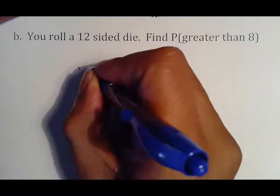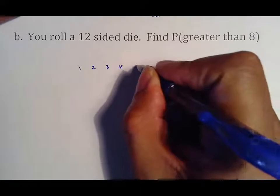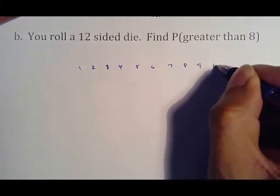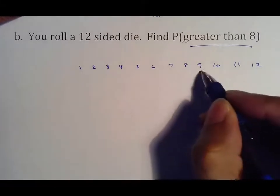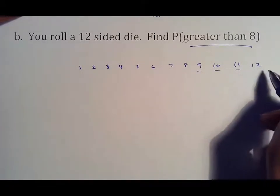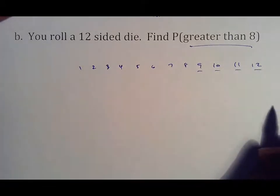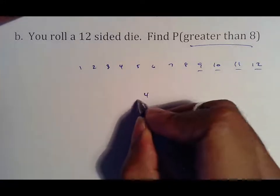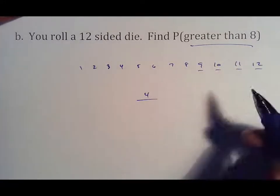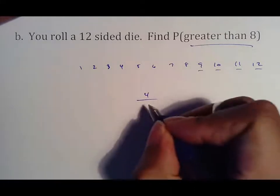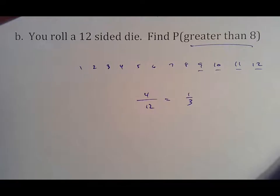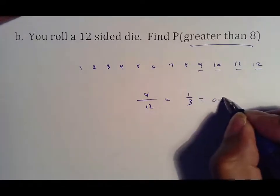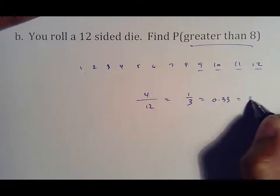You roll a 12-sided die. Find the probability that the number is greater than 8. If you have to list all the numbers on the 12-sided die, greater than 8 is what I want. Well, that's bigger than 8, that's bigger than 8, that's bigger than 8, and that's bigger than 8. So how many successes do I have? Four, because 8's not one of them. It says greater than 8, not equal to 8. How many numbers do I have to choose from? 12.